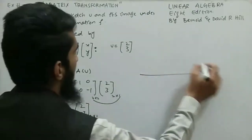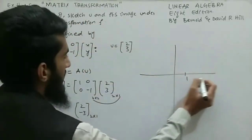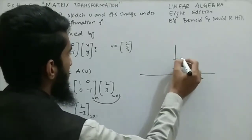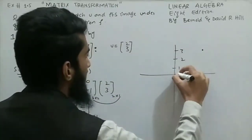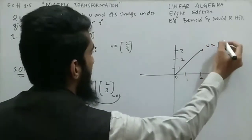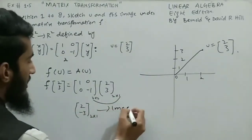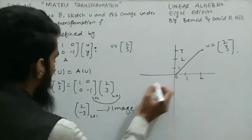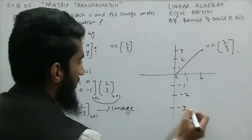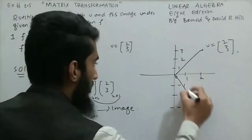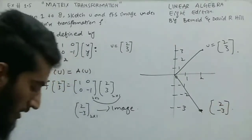Now we show this in the coordinate plane. Our given u = (2,3) is plotted at x=2, y=3 on the axes. The image is (2, -3), so we take x=2 and y=-3, plotted at minus 3 on the y-axis. This is the image of the given u = (2,3), and its image under this transformation is (2,-3).